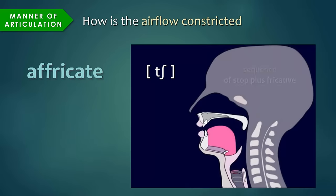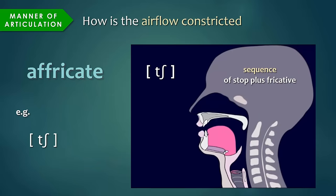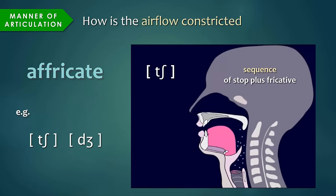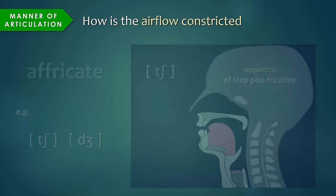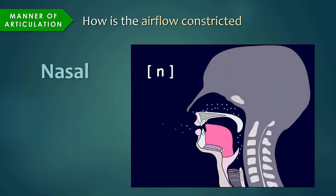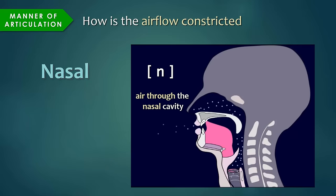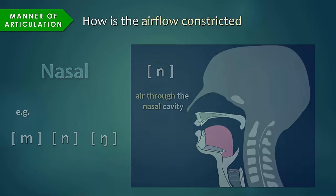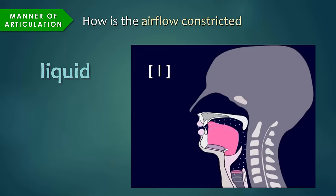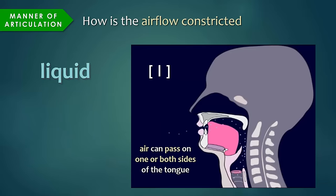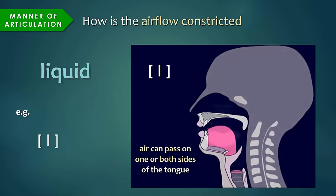Affricates result from a sequence of stop plus fricative in rapid succession, so the affricate ch represents t plus sh, just as the affricate j results from d plus zh. Nasal sounds are produced when the velum is lowered, allowing air to pass through the nasal cavity, such as m, n. Liquid sounds are produced by allowing air to pass by one or both sides of the tongue, and the tongue itself can move a lot to shape the sound, such as l, r.